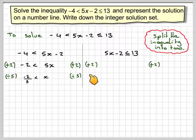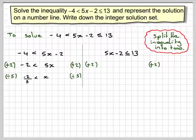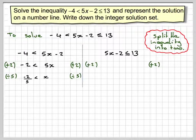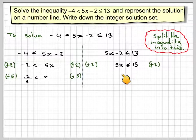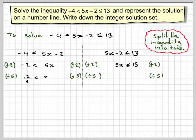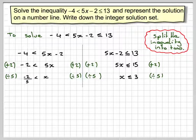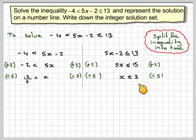And here we do exactly the same thing, add 2 to both sides. So if we add 2 to this side, we get 5x. If we add 2 to the other side, we get 15. And then if we divide by 5, we get x is less than or equal to 3.